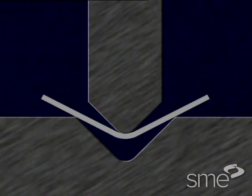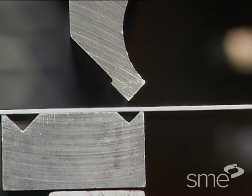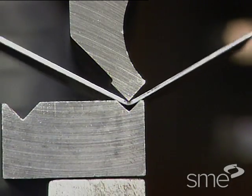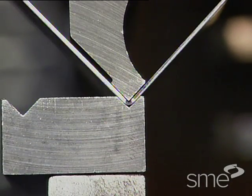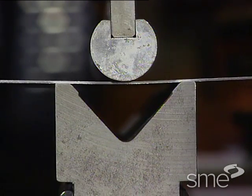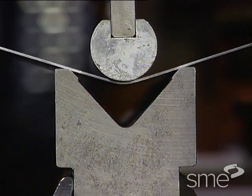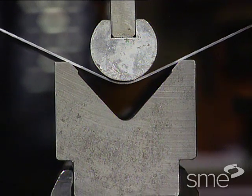Three contact points are involved in a bend: the tip of the punch and two points on the female die. The material is bent to the desired angle as the punch enters the die. The larger the die opening, the smaller the force required to form a given angle.